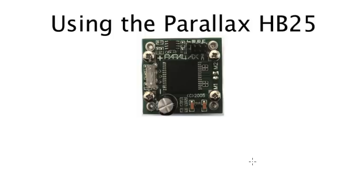The Parallax HB25 is a motor controller so that a microcontroller can control motors that have higher current and voltage requirements than what the microcontroller can provide.